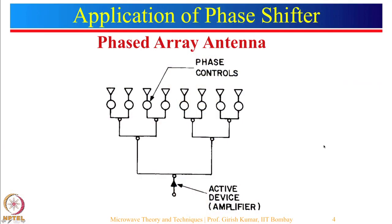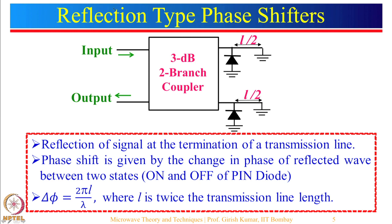Let us see how we can realize these phase shifters. First, let us look at the reflection type phase shifter. Here we have input coming to one port of a 3 dB 2-branch coupler; this is the output port, and the other two ports have PIN diodes connected with a line length L by 2. Half power comes to one port with a minus 90-degree phase shift, and the other with a minus 180-degree phase shift.